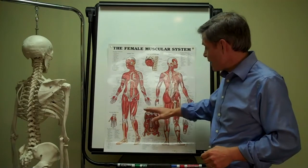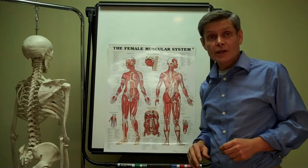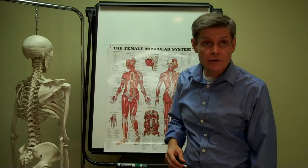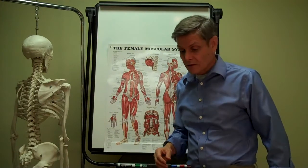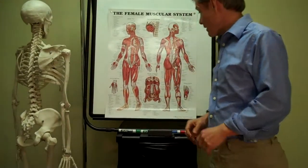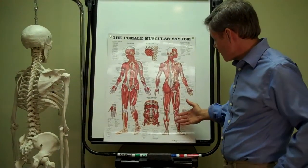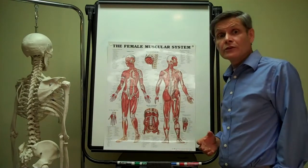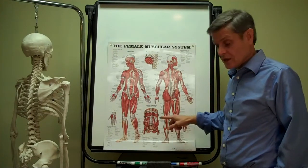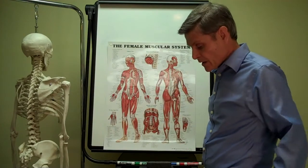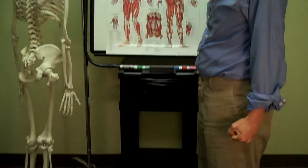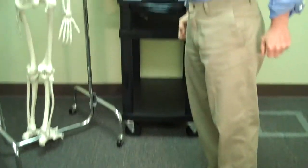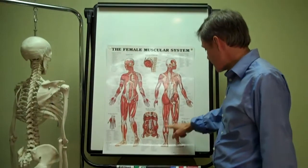In the front of the thigh, we have a group of muscles called the quadriceps muscles — commonly known as the quads — very powerful muscles that allow us to straighten out the knee. Then, down in the lower leg, we have a number of very important muscles. In particular, we have the muscle commonly known as the calf muscle — it's called the gastrocnemius. That is the muscle that literally pulls us up by our heels and allows us to stand on our toes, very important for walking and running.